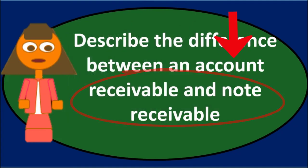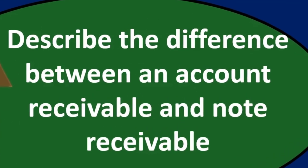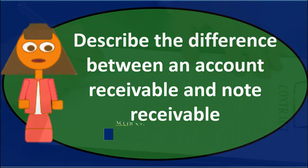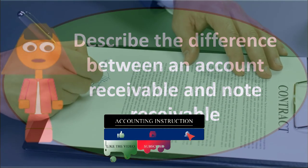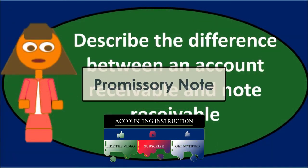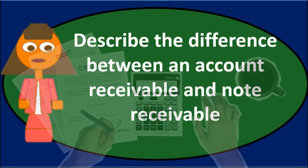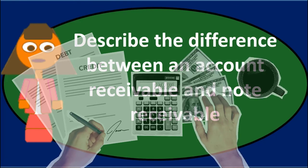It is also possible to convert an accounts receivable to a notes receivable. If the accounts receivable became past due — if it took over the typical 30-day term to collect — we may want formal documentation, an agreement with the customer to help assure future payment by getting a promissory note. This converts it from an accounts receivable to a notes receivable. The journal entry is simple: debit notes receivable, increasing that asset, and credit accounts receivable, decreasing that asset.